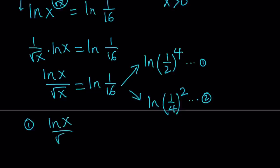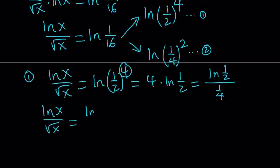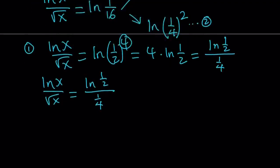Let's call these option one and option two and go with option one first. If we write this as ln x over square root of x equals ln(1/2) to the fourth power, then we can move the 4 to the front: 4 times ln(1/2). Writing this as a quotient — ln(1/2) divided by 1/4 — we try to find a one-to-one correspondence. Can x equal 1/2 and square root of x equal 1/4 at the same time? The answer is no, it's the other way around, which tells us that option two is the one that should work.